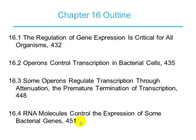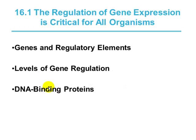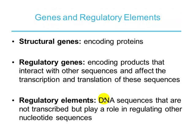In prokaryotes, genes are organized into operon systems — a very neat, organized way of expressing genes. There are several ways in which these operons are regulated. We have genes and regulatory elements, different levels of gene regulation, and DNA binding proteins that help with gene regulation.